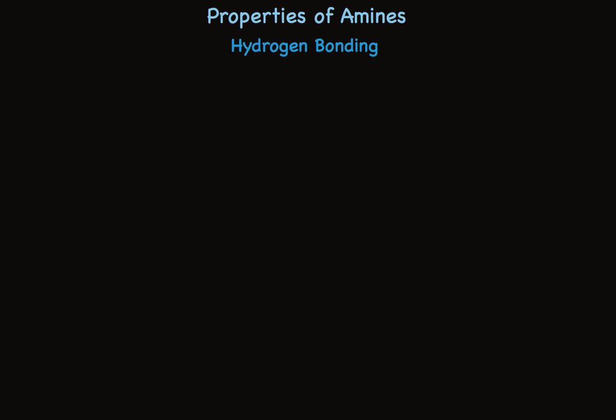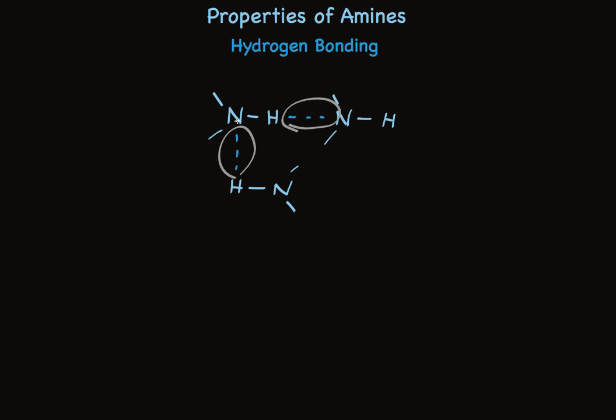One of the key attributes of amines that affects their physical properties is the ability to hydrogen bond, just like alcohols — though hydrogen bonding in amines is weaker. Like alcohols, we can have hydrogen bonding between multiple amine molecules. For an amine that has a hydrogen attached, there are two types: the hydrogen attached to nitrogen can hydrogen bond to another molecule, and the nitrogen itself can hydrogen bond to a hydrogen of another amine molecule. This greatly increases intermolecular forces and raises boiling points.